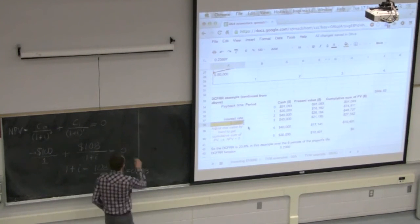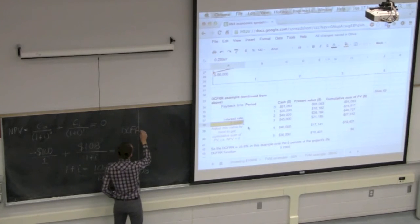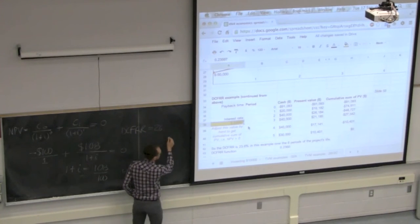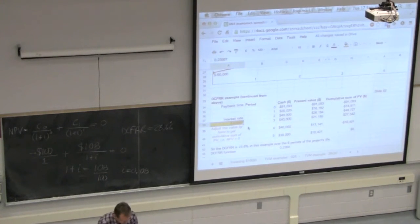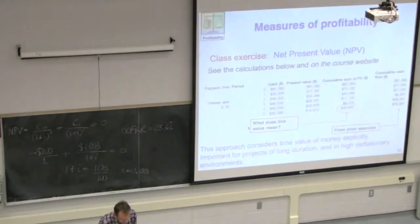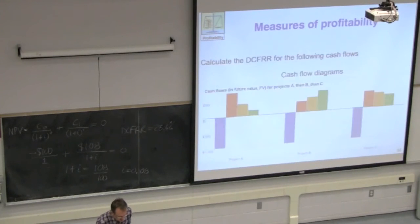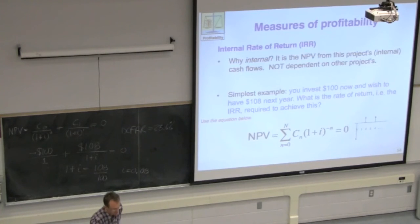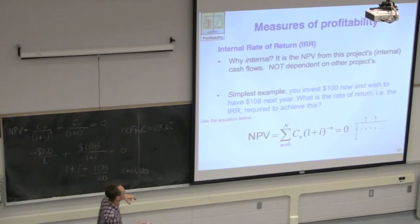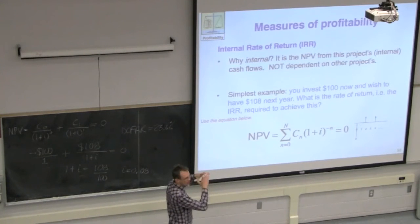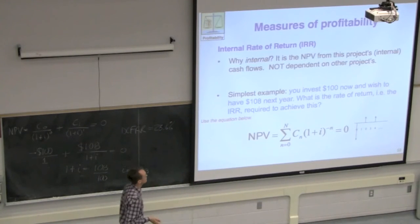The discounted cash flow rate of return — another way people phrase this is IRR, internal rate of return. The word 'internal' refers to the cash flows within the project: we're not considering other projects' impacts on ours, only looking at cash flows in and out of that boundary for that single project independent of others.